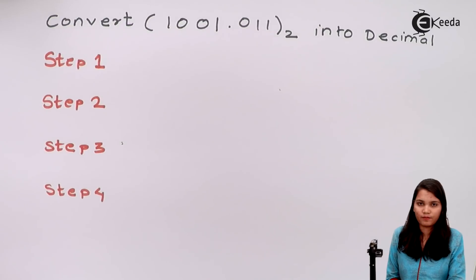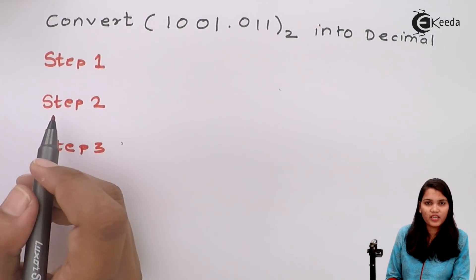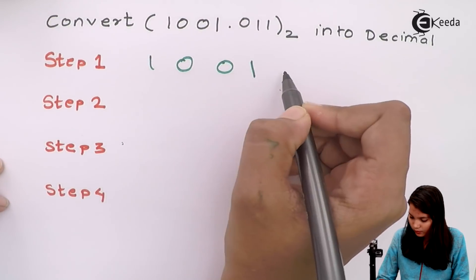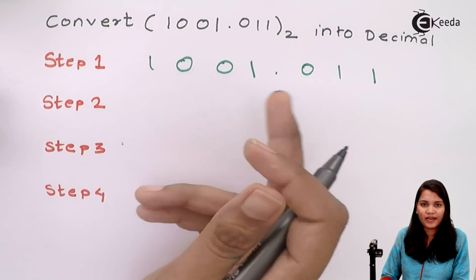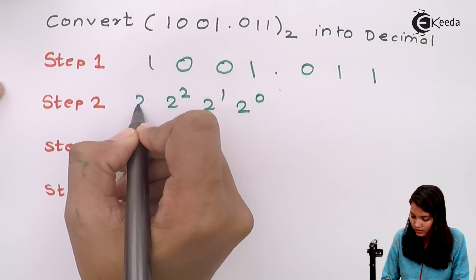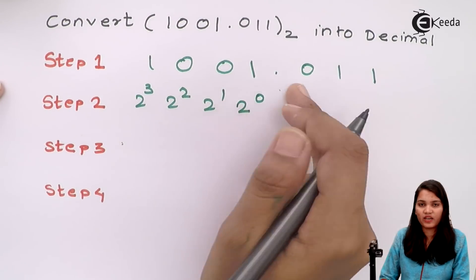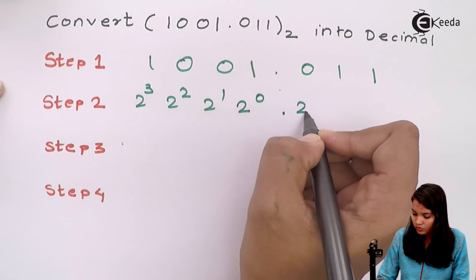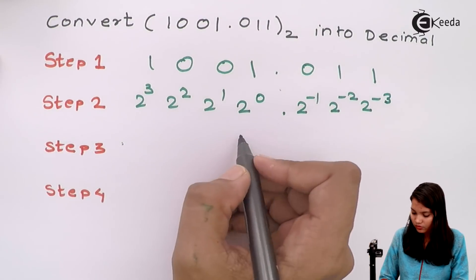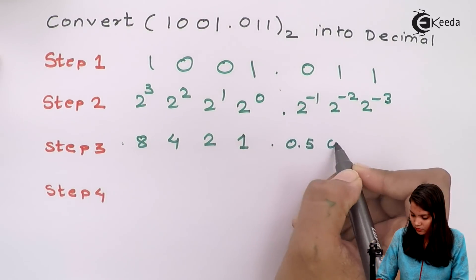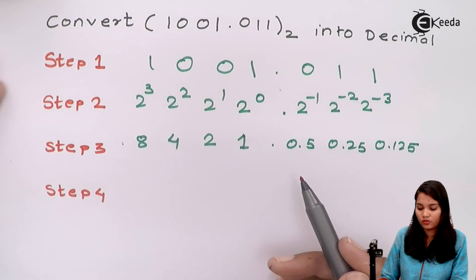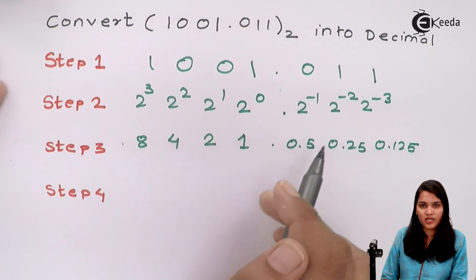Now let's see another example quickly. The given binary number is 1 0 0 1 . 0 1 1. Write down the weightage: 2 raise to 0, 2 raise to 1, 2 raise to 2, 2 raise to 3 for the integer part, and 2 raise to minus 1, 2 raise to minus 2, 2 raise to minus 3 for the fractional part. Now cancel the weightage values placed below 0 bits — there are 3 zeros.